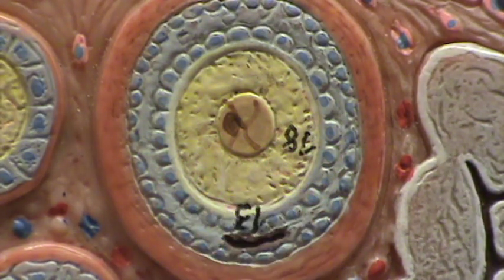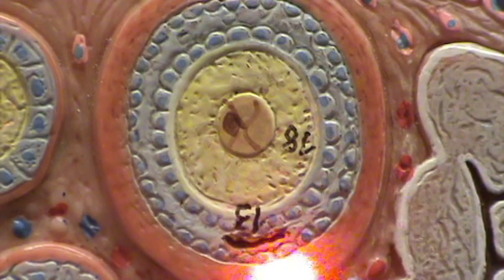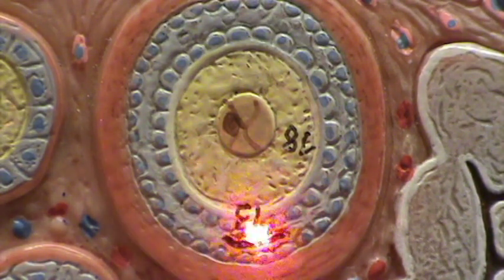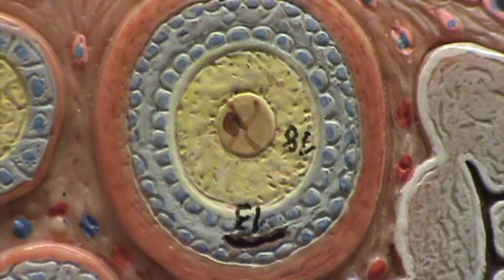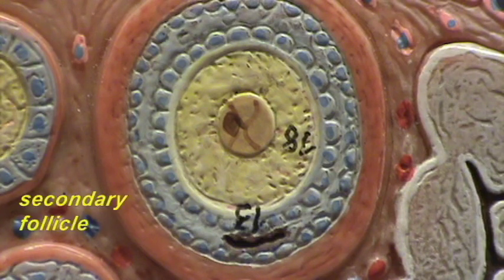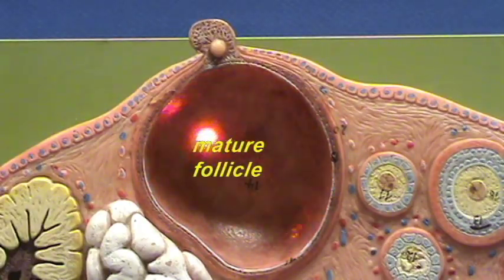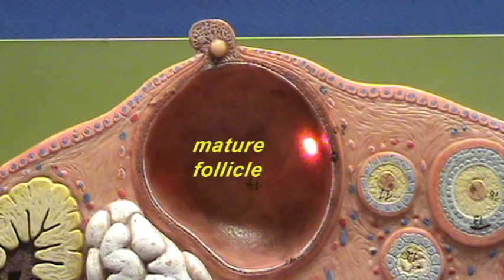A particular feature that appears in the follicle as it gets bigger is fluid-filled spaces between the granulosa cells. This fluid coalesces and becomes a larger fluid-filled chamber. When you see this fluid-filled chamber, it is referred to as an antrum, and when you see an antrum, the follicle is then called a secondary follicle.